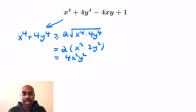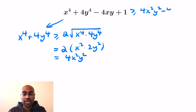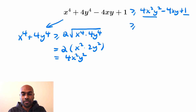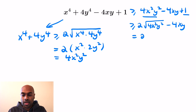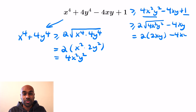So our original expression is going to be greater than or equal to 4x squared y squared minus 4xy plus 1. And we can actually apply the arithmetic-geometric mean inequality again to the first and the last term of what we have remaining, to say that that's greater than or equal to twice the square root of their product, which is the square root of 4x squared y squared. Then we're subtracting the 4xy, and this gives us twice 2xy minus 4xy, which is 0.